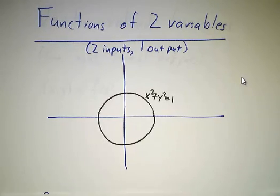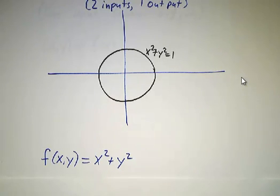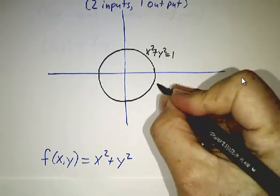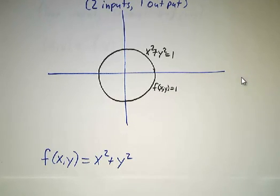And what's essentially going on is we've got a function of two variables. f of x, y is x squared plus y squared. And this circle is all of the points where f of x, y equals one. It's called the level set of a function.